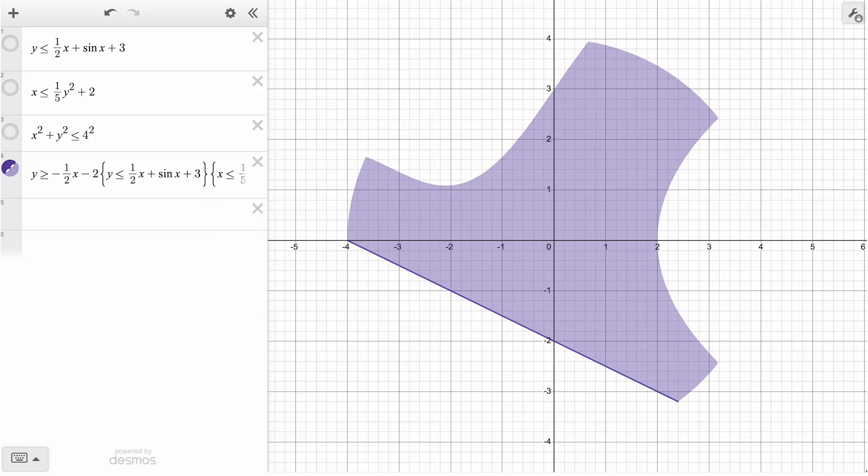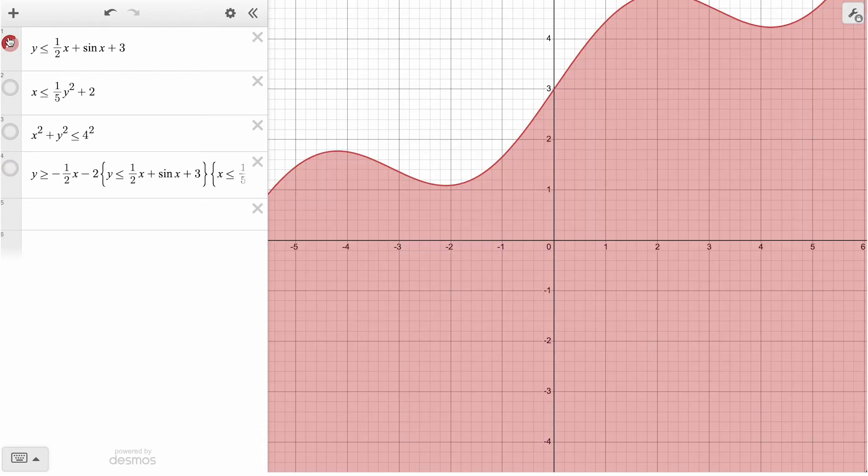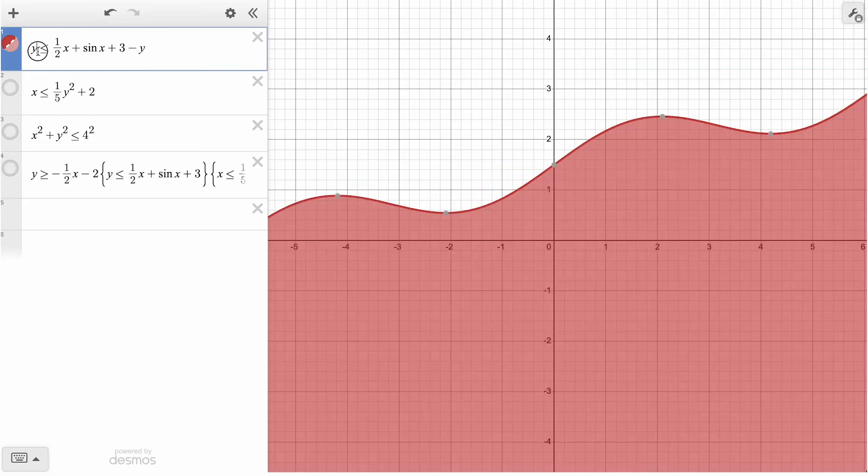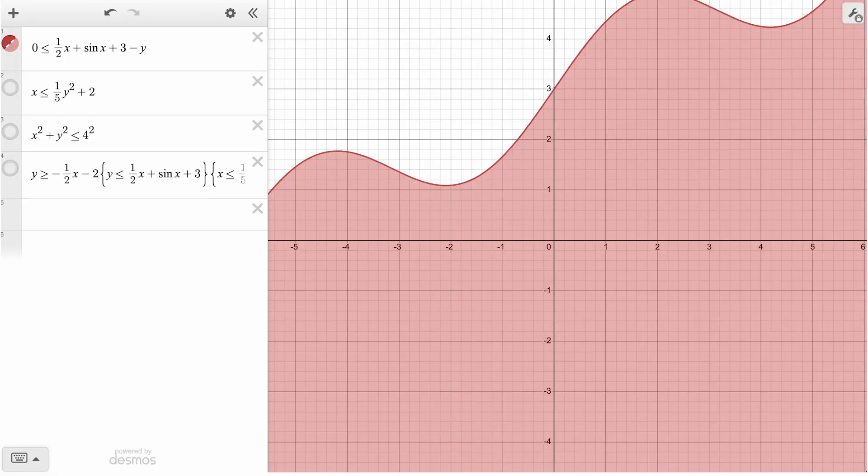Let's look at one clever strategy for shading more complex intersections. As these are all algebraic expressions, we can first rearrange them to get them to have a zero on one side. For our sine curve, if we subtract y from both sides, we have an equivalent expression with an equivalent graph, where zero is less than this expression of x and y. That is, our shaded region represents all the points where this expression is positive.